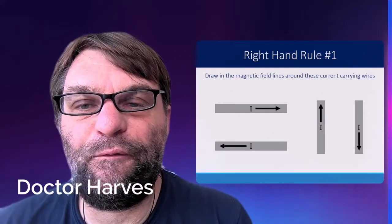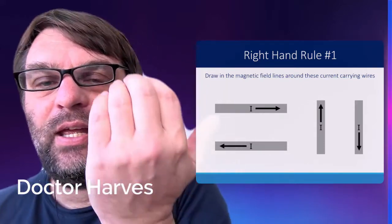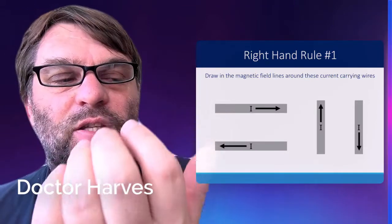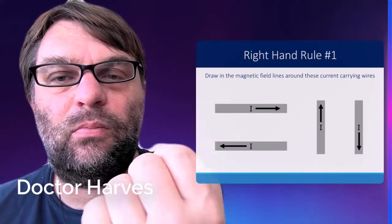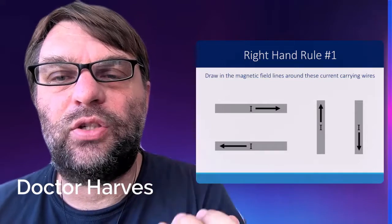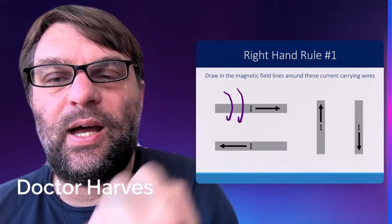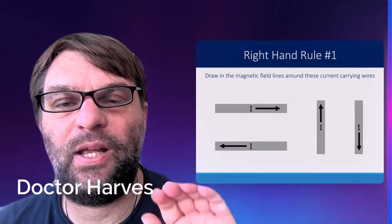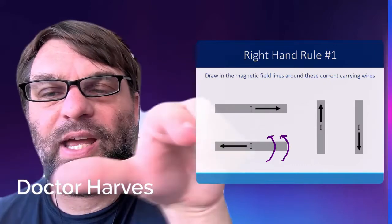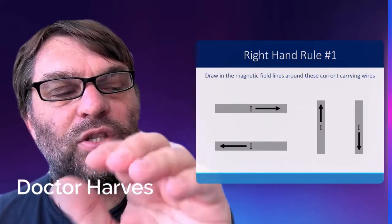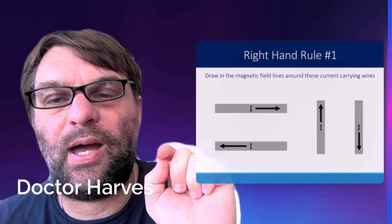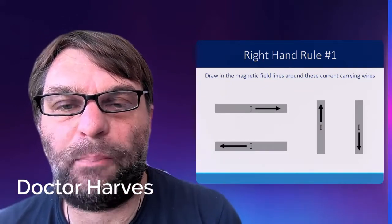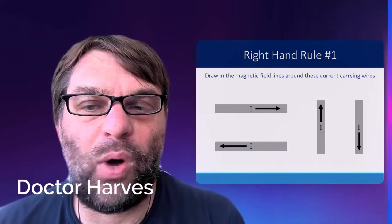For the first one, we get our right hand. The direction of the current is going that way, so it means that the magnetic field is going to be going towards us. So, dots on the top and crosses on the bottom. The second example, it's the opposite. The current's now going that way. So, it means that the magnetic field is going into the page on top and out of the page at the bottom of the wire.